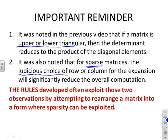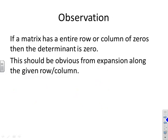Why is that important? Because the rules will often try to exploit these two observations. A final observation: if a matrix has an entire row or column of zeros, then the determinant is zero.